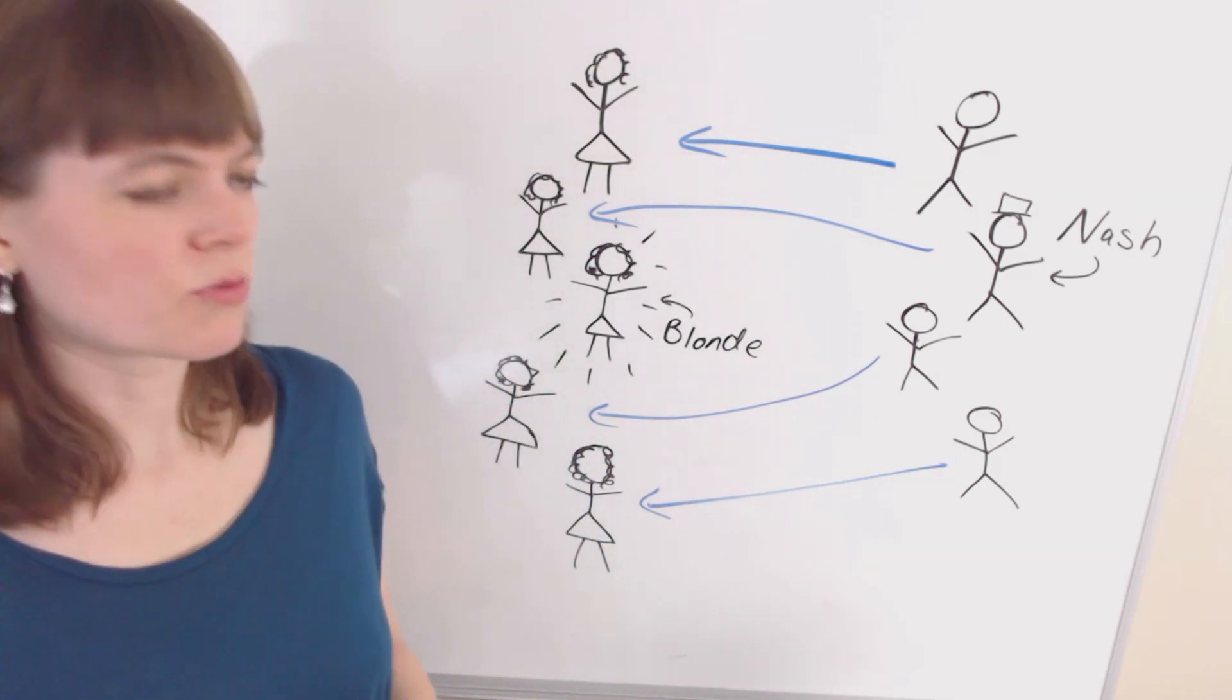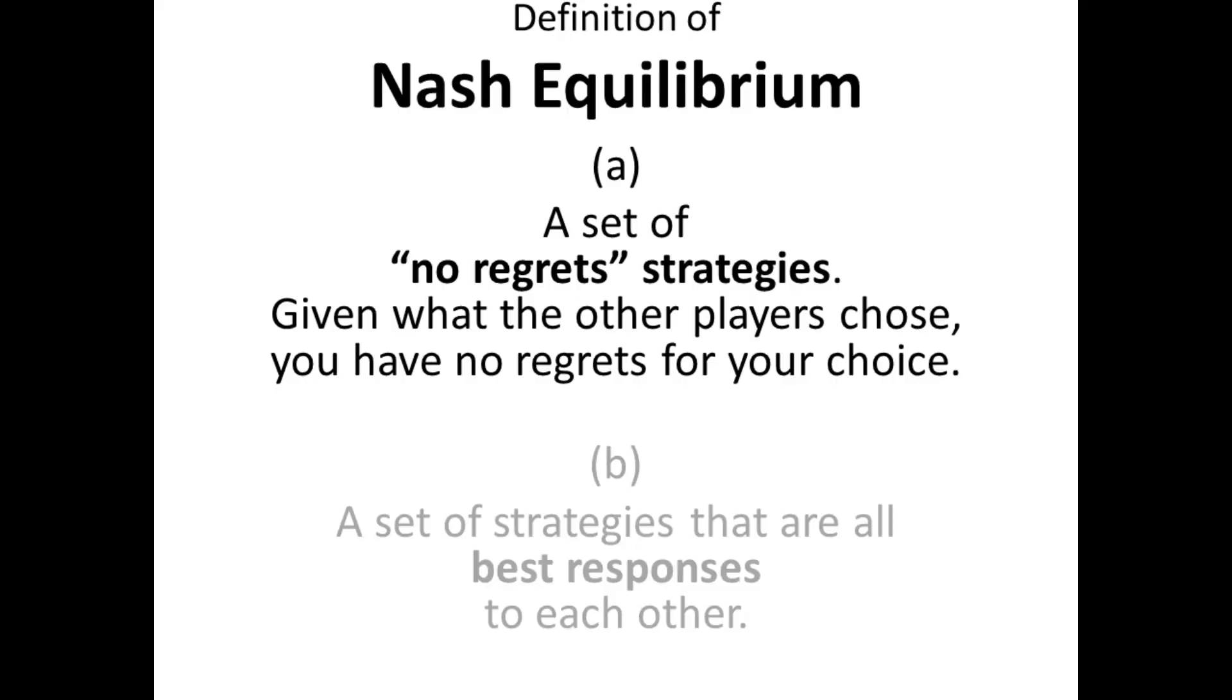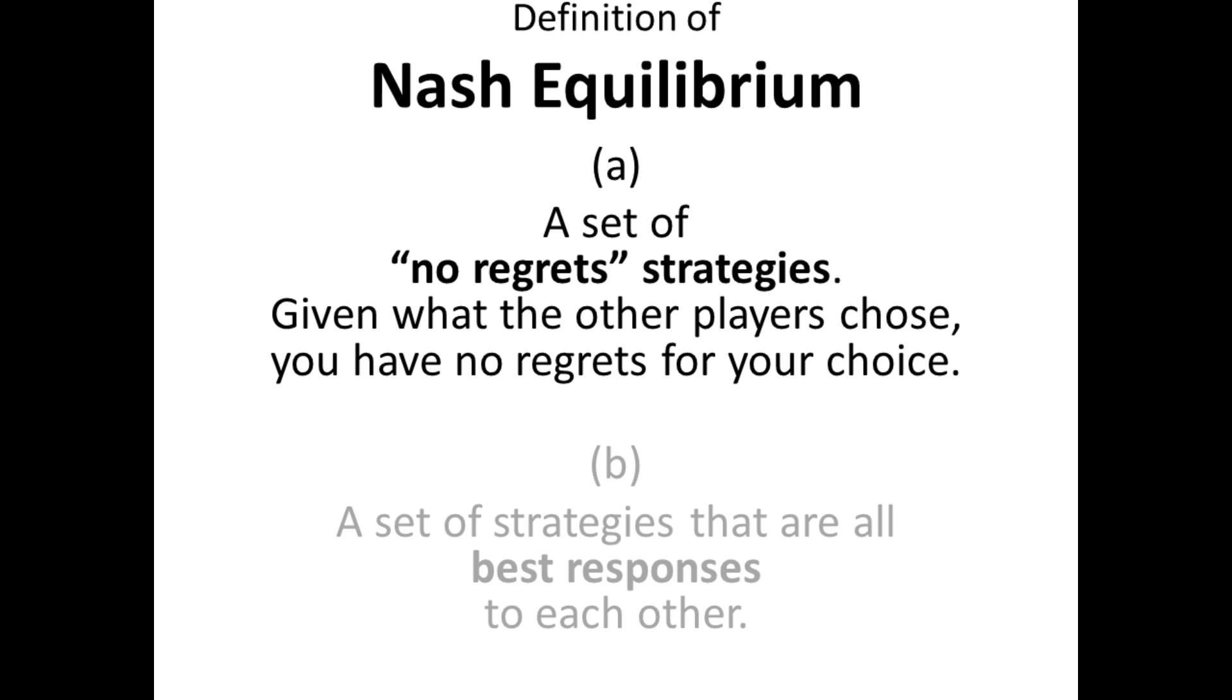Now, to understand what's wrong with this, we need to look at the definition of Nash equilibrium. Nash equilibrium is a no regrets equilibrium, meaning every player, given that equilibrium, can look at what the other players chose and say, given what those other players did, I'm happy with my choice.